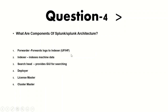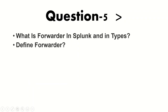The next question: What are the components of Splunk, or explain Splunk architecture? The main components are: forwarder, indexer, search head, deployer, cluster master, license master, and deployment server. You need to know in detail what each component does.